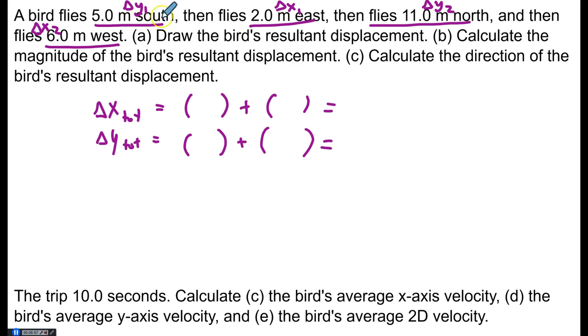So just add up the x-axis displacements, add the displacements on the y, and what do we have? On the y-axis we have negative 5 because it's south. Then we have positive 11 because it's north. On the x-axis we have positive 2 because east. Negative 6 because west. So this is negative 4 meters is the total x displacement. Positive 6 is the total y displacement.